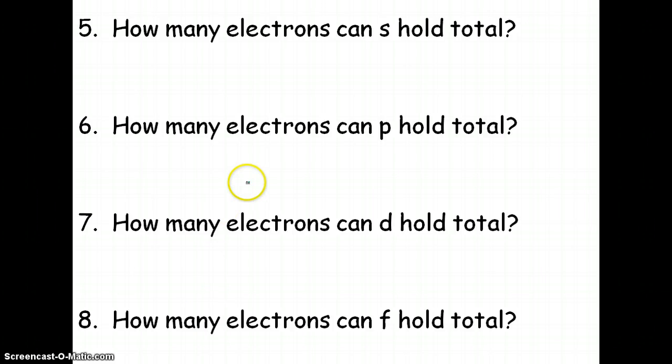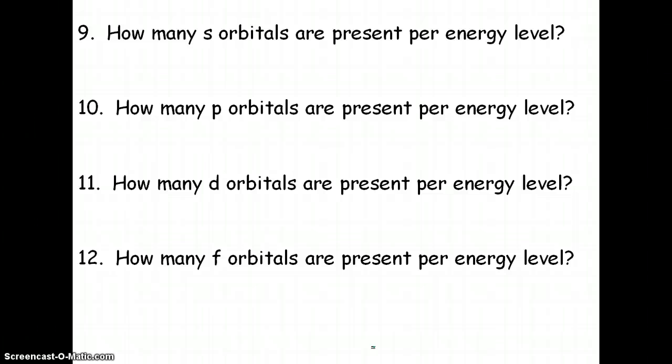The S can hold a total of how many electrons? Two. P can hold six total electrons. D can hold 10, and F can hold 14. This is the same as the number of boxes going across that are in each of those sections of the periodic table.